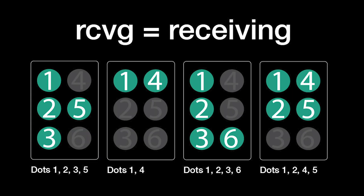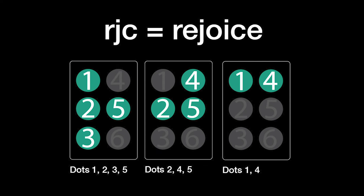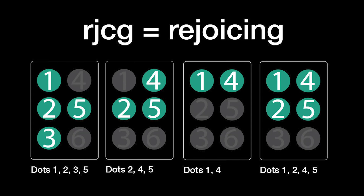Receiving is R-C-V-G: dots 1, 2, 3, and 5, plus dots 1, 2, 3, and 6, plus dots 1, 2, 4, and 5. Rejoice is R-J-C: dots 1, 2, 3, and 5, plus dots 1, 4, and 6, plus dots 1 and 4. Rejoicing is R-J-C-G: dots 1, 2, 3, and 5, plus dots 2, 4, and 5, plus dots 1 and 4, plus dots 1, 2, 4, and 5.